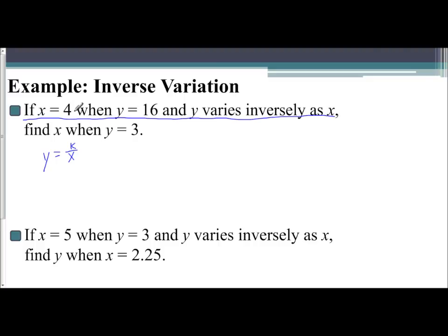The first part of the sentence also tells me what my x and my y values are. So I know y, I know x, I can solve for k. So I get 16 equals k over 4. So to solve this, I would multiply both sides by 4. And 16 times 4 is 64. So my constant of variation is 64.